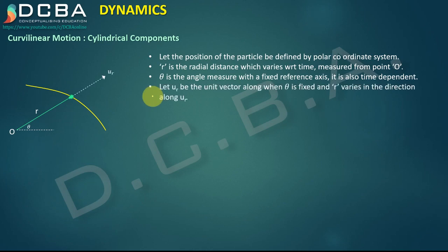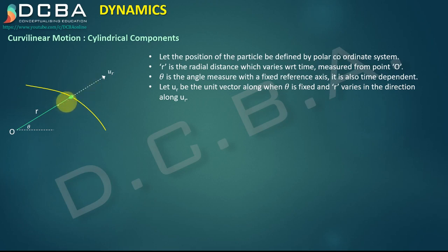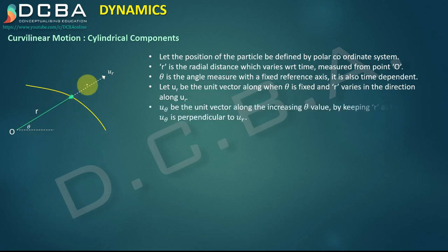To represent r in vector format, we need to define unit vectors. Let ur be the unit vector along the radial direction when θ is fixed — as r increases or decreases, ur always points along the radial direction, and its position is fixed when θ is fixed. Let uθ be the unit vector in the direction of increasing θ, keeping r fixed.